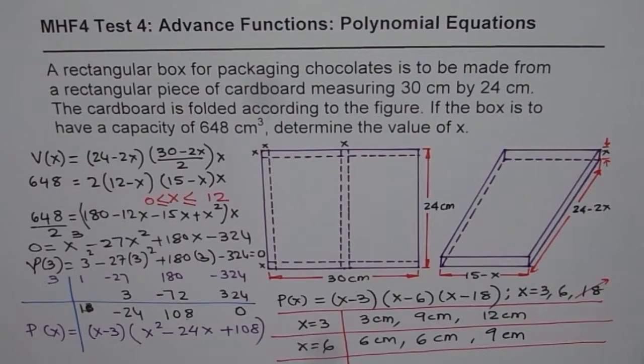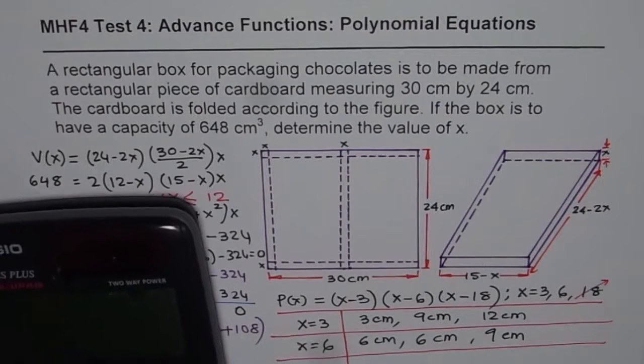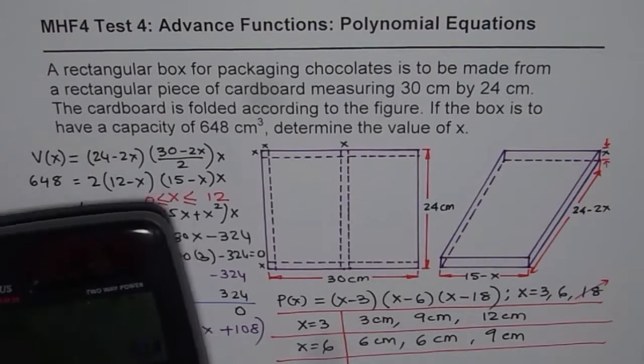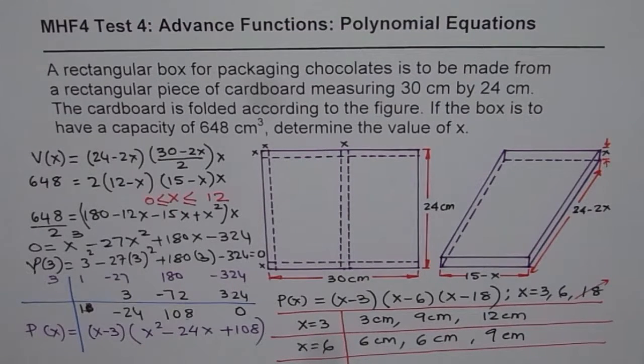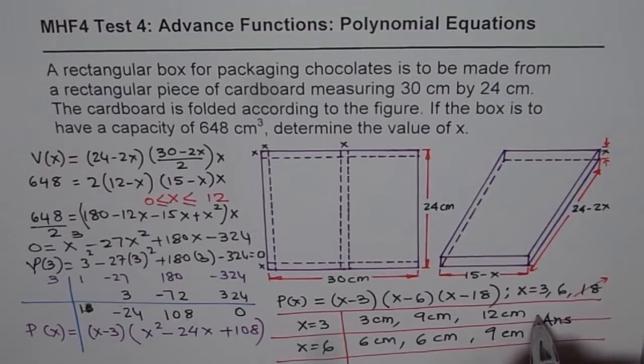Now it's a good practice to check your answers. So we will multiply these numbers, which is 3 times 9 times 12. What do we get? 324. That's what we wanted. And then 6 times 6 times 9. What do we get? 324. So that's the perfect volume which we want. So these, both of them are valid answers for us. Do you see that?